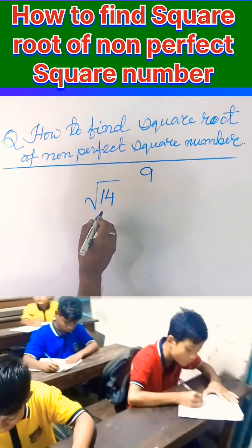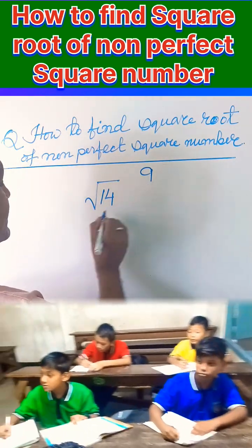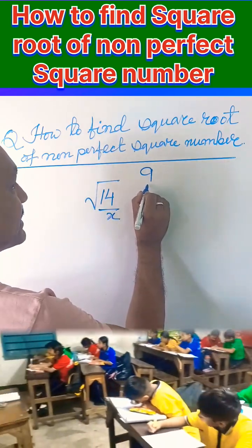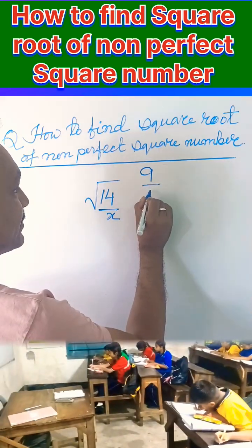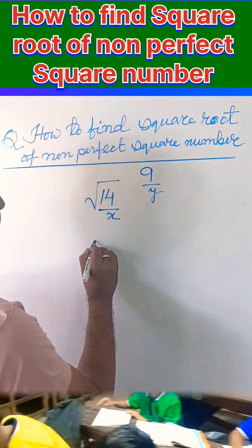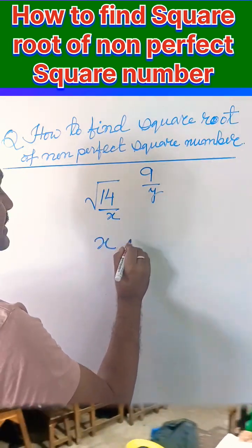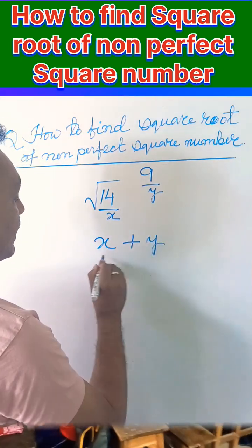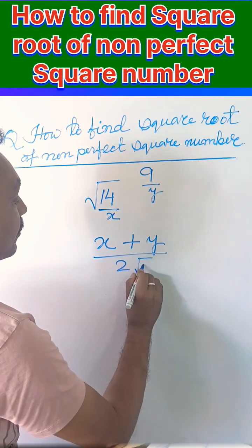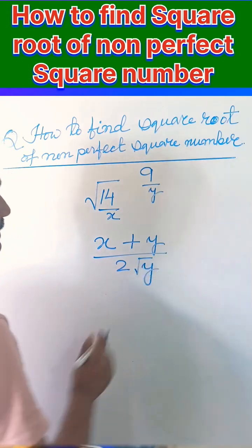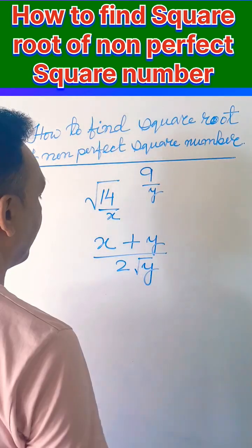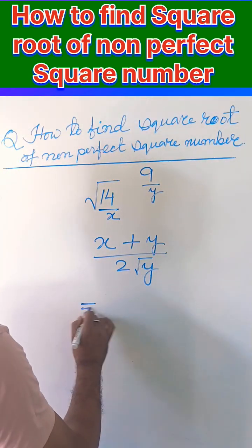So consider 14 as x and 9 as y. Now we are going to use a formula: (x + y) / (2 × √y). This is the formula you have to remember to find out the square root of a non-perfect square number.